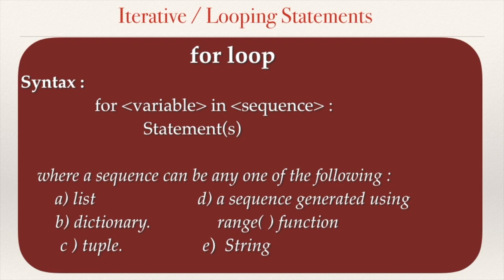The for loop statements are responsible for iterating a variable through a series of values present within a sequence using the 'in' keyword. With each iteration, the loop variable takes the next value in the sequence. A sequence in Python is a group of items with deterministic ordering. Examples include list, tuple, dictionary, and string. Apart from these, there is also a range function which generates a range of numbers as a sequence.